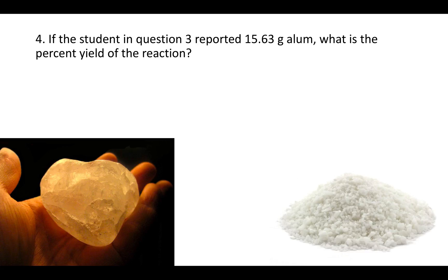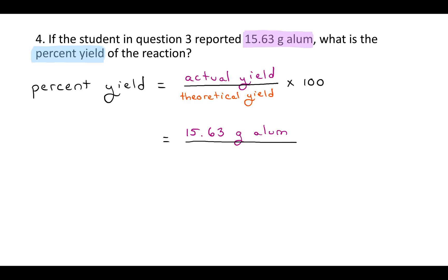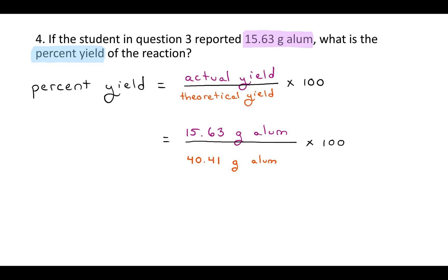Question 4 asks: if the student from question 3 collected 15.63 grams of alum, what is the percent yield? Percent yield is actual yield over theoretical yield, times 100. The actual yield — what the student got in the lab — was 15.63 grams of alum. The theoretical yield from the previous question is 40.41 grams of alum. Dividing and multiplying by 100 gives 38.68% yield.